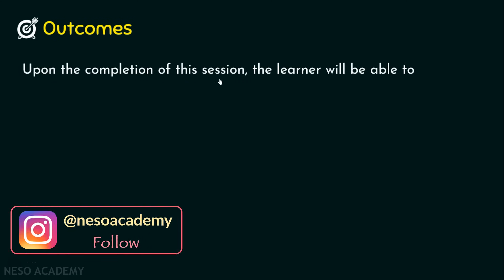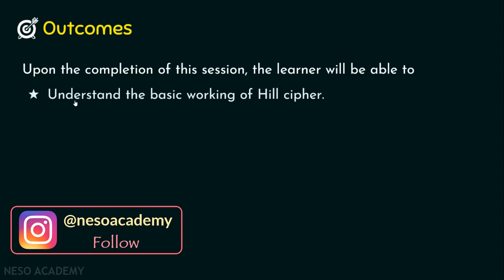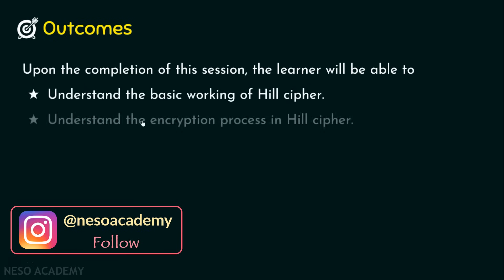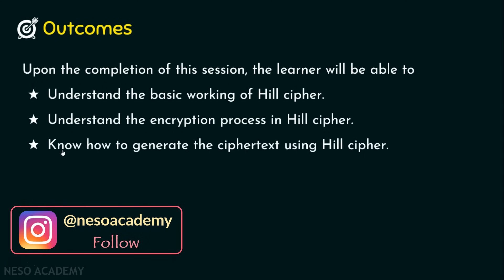Upon the completion of the session, the learner will be able to: Outcome one, understand the basic working of Hill Cipher. Outcome two, understand the encryption process in Hill Cipher. And outcome three, know how to generate the ciphertext using Hill Cipher.